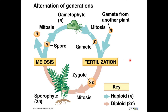Let's start with the sporophyte generation, because this is what you probably recognize — this is a fern. The sporophyte generation is this structure here. It is the multicellular diploid form, and this diploid form will produce spores by the process of meiosis.